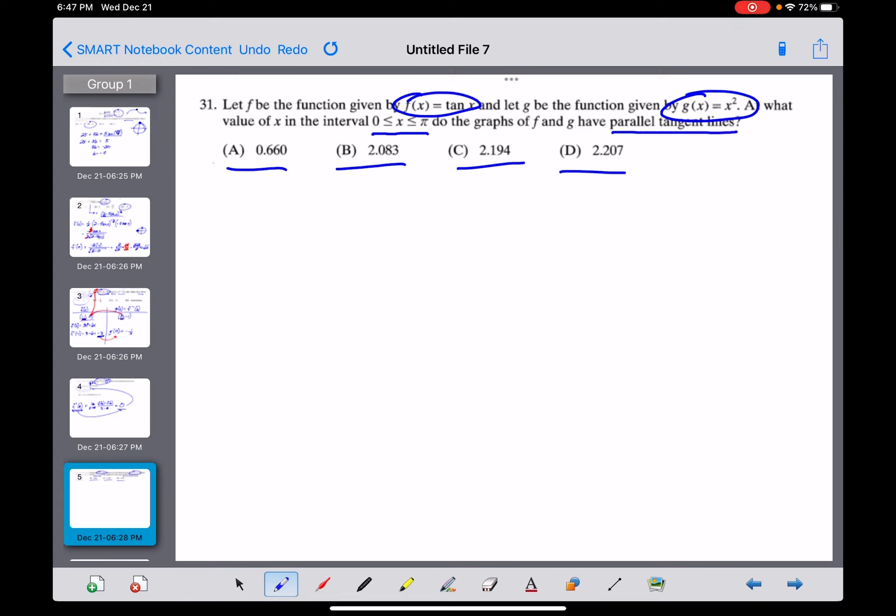That's the big phrase you want to focus on. Parallel tangent lines means that their derivatives have to be equal to each other. The derivative of each function tells you the slope of their tangent lines, and for them to be parallel, those slopes have to be the same. So we want to know where is f'(x) equal to g'(x)?